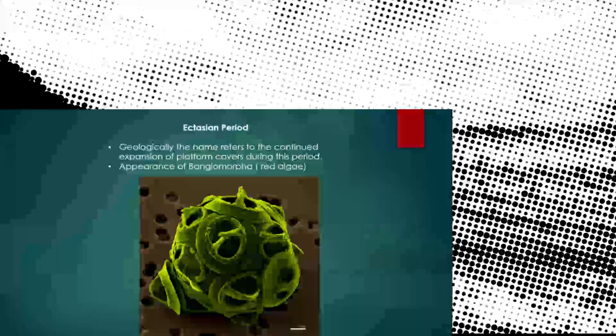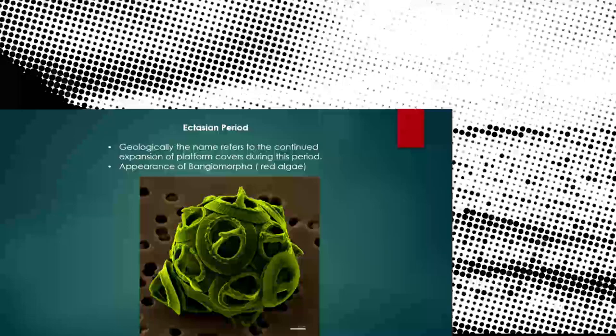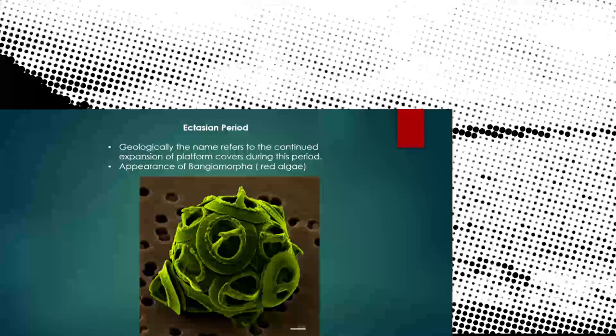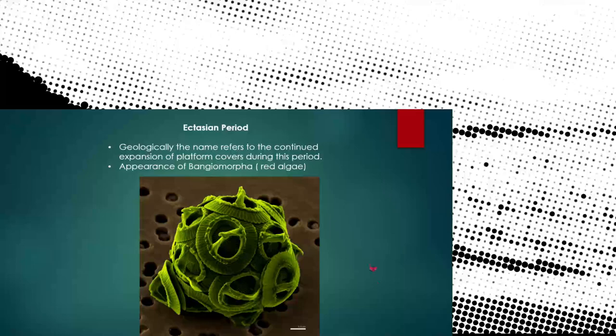The next period is the Ectasian Period. Geologically, the name refers to the continued expansion of platform covers during this period. Appearance of red algae emerge. You can see a closeup of algae here in this picture.